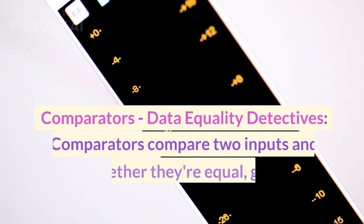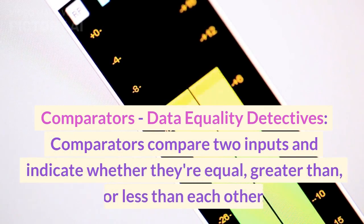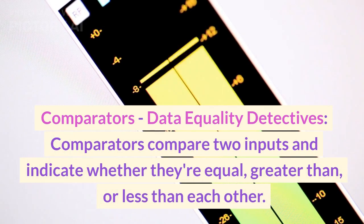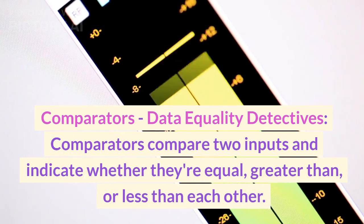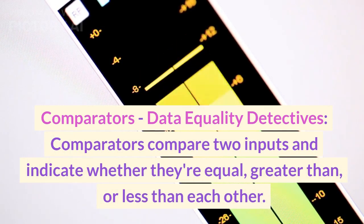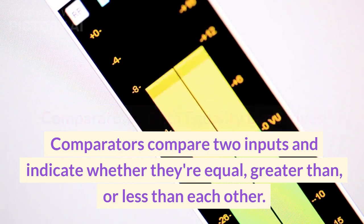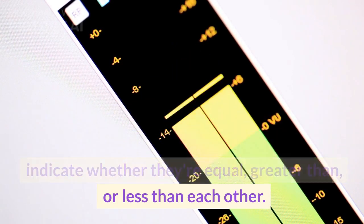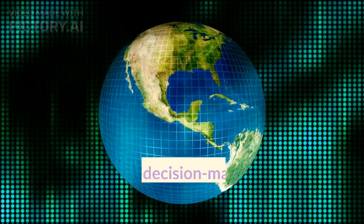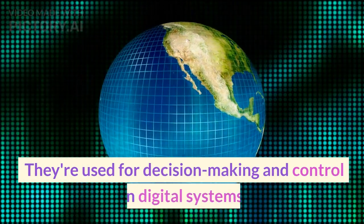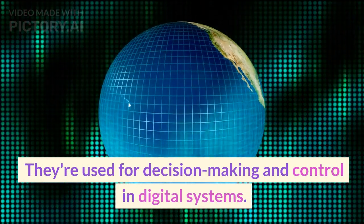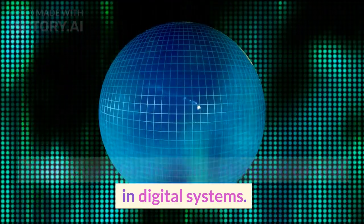8. Comparators — data equality detectives. Comparators compare two inputs and indicate whether they're equal, greater than, or less than each other. They're used for decision making and control in digital systems.